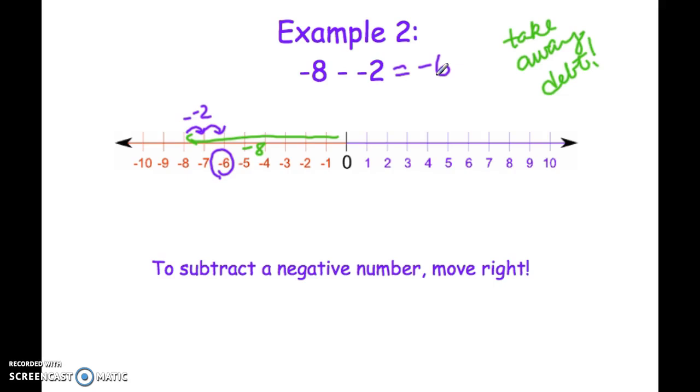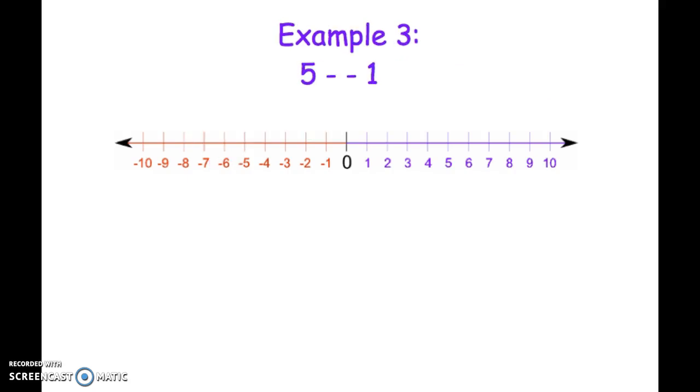Let's try a couple more examples. Five minus negative one. If you're feeling comfortable, pause the video and try this on your own. If not, just follow along. For five minus negative one, I start at zero and move to five. I'm taking away a negative, so remember that's a good thing. I'm going to move to the right and land at six. So five minus negative one is six.